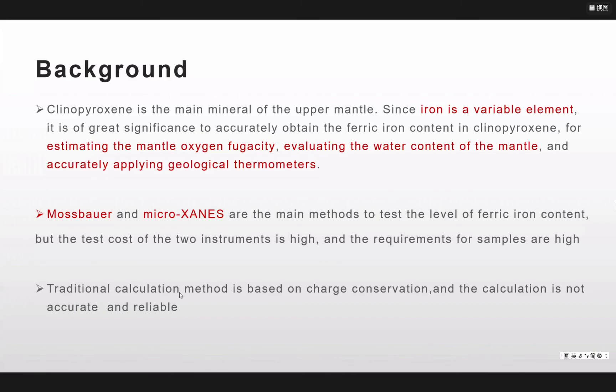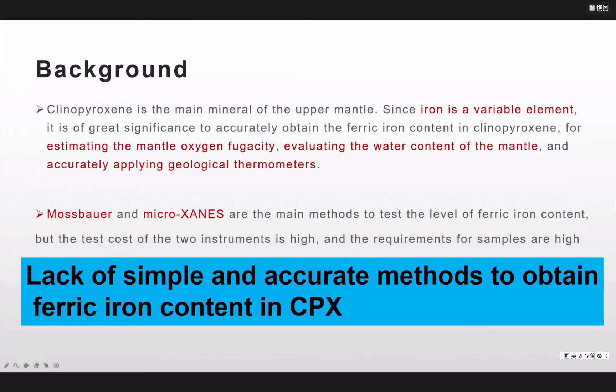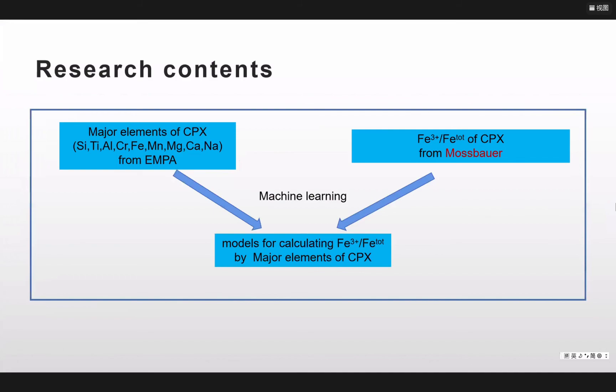There are also some ways for us to calculate the contents of the ferric ion from their major elements. That is some traditional calculation methods and they are based on the charge conservation. But this calculation is not always accurate and reliable. So some new methods should be here to solve this problem.